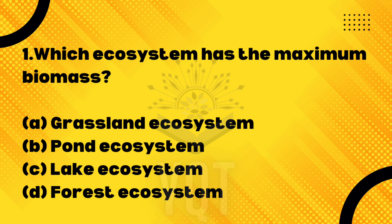Okay, the first question is: which ecosystem has the maximum biomass? This question appeared in 2017. Option A: grassland. Option B: pond. Option C: lake. Option D: forest.